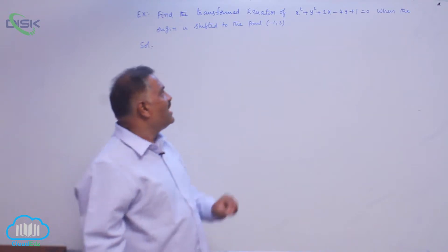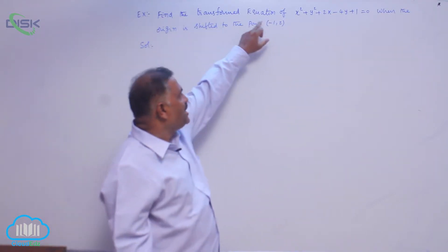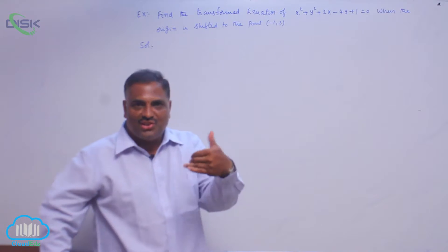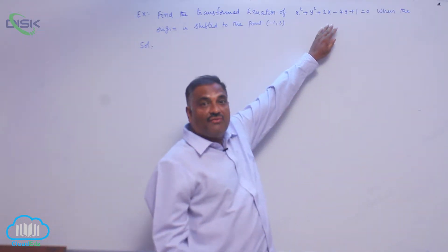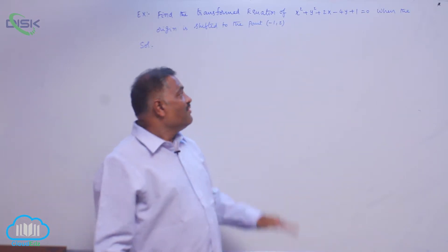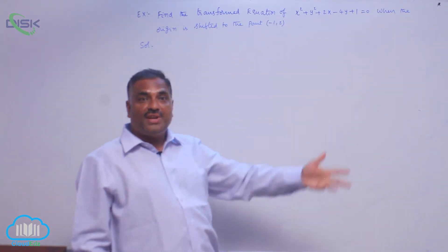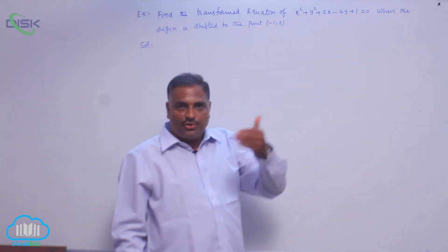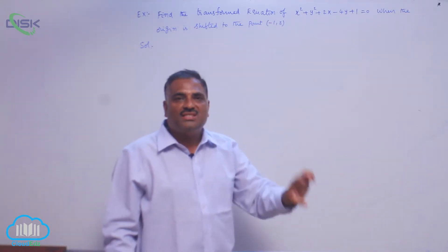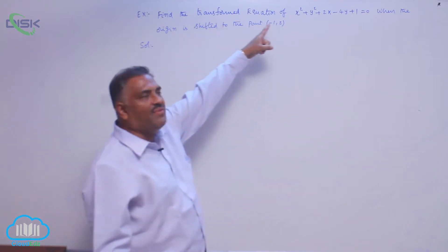Now we can see very clearly the keyword transformed equation, that means change in the form. This is the old system of equation when origin is (0,0). When origin (0,0) is shifted to (-1, 2), what is its new shape that we need to find out. That new format is called transformed equation.